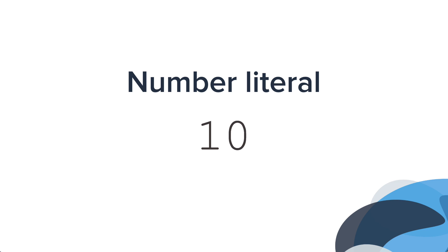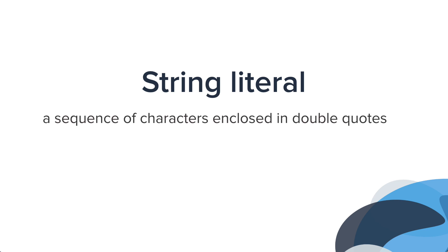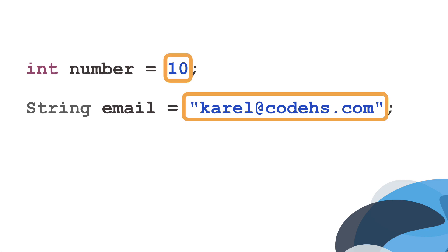For example, a number literal might be 10. If you type the integer 10 into your program, it is a literal because that is exactly what it is — the integer value of 10. Similarly, you can have a string literal, which is really just a string. As a reminder, a string is a sequence of characters in double quotes, like 'I am a string.' You've been using literals already when you assigned a value to a variable — in this example, 10 and carol@codehs.com are literals.